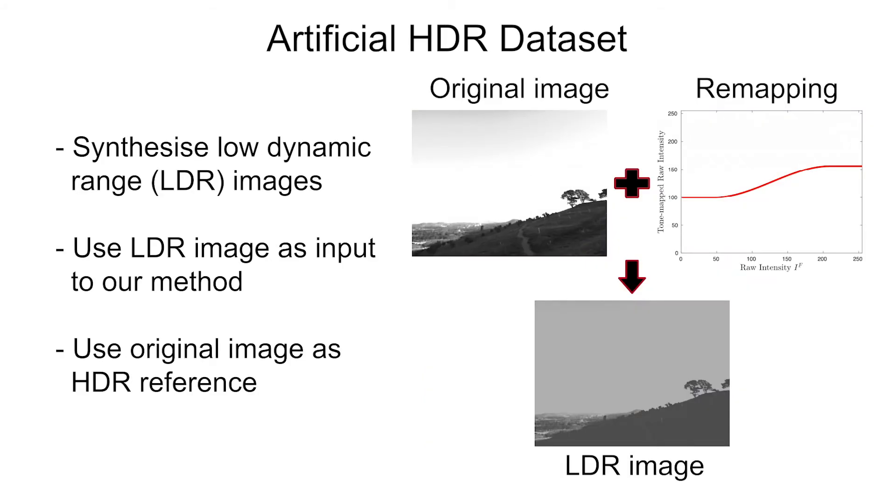In our artificial HDR sequences, we synthesize low dynamic range images to use as input to test our method, and use the original image as ground truth.